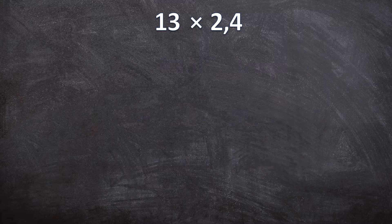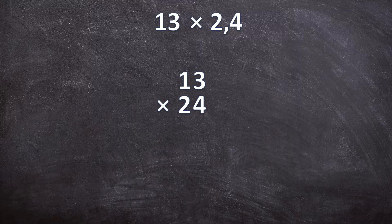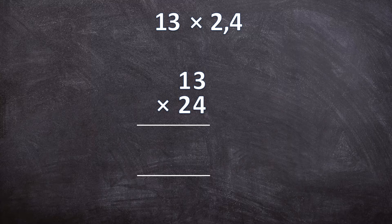Let's look at 13 times 2,4. The first step: ignore the comma and do normal multiplication, so here we have 13 times 24. You draw your two lines and start multiplying. If you're struggling with normal multiplication, I already have a few videos explaining it — I'll link them. So: 3 times 4 is 12, write down your 2, carry over your 1. 1 times 4 is 4, plus the 1 you carried over is 5.